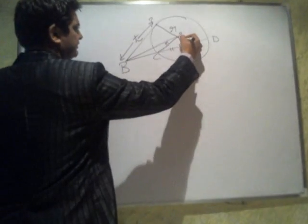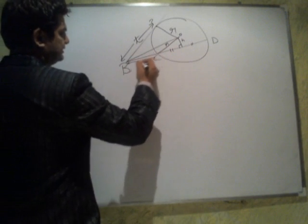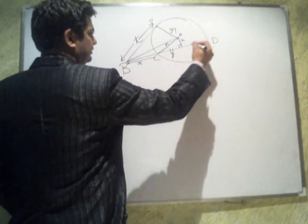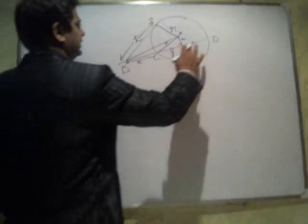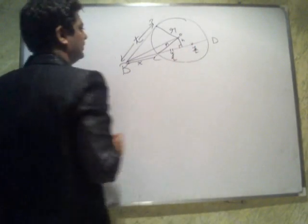This is OB. If this length is given as H, and this length is given as X. So let this be Y, let this be Y. Let this be Y by 2, and this be Y by 2.